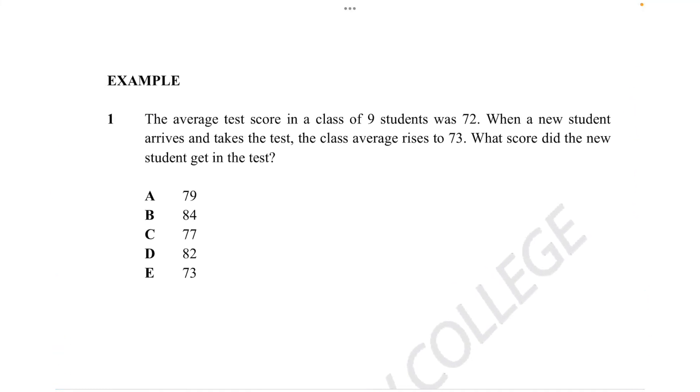So here's an example. The average test score in a class of 9 students was 72. When a new student arrives and takes the test, the class average rises to 73. What score did the new student get in the test? So this may seem a little bit difficult at first, but basically what the question is asking is we're supposed to reverse engineer the process of finding the average. And instead, now we're sort of finding the individual mark or in this case, the individual mark of the new student.